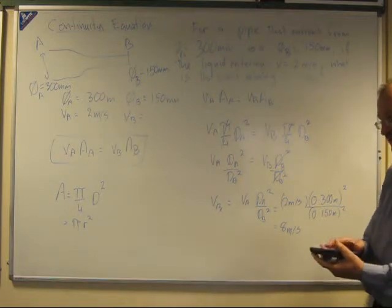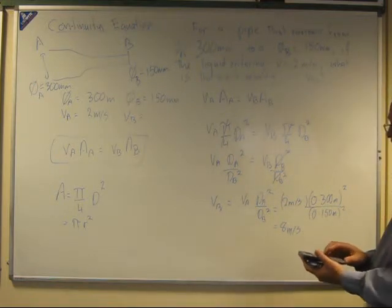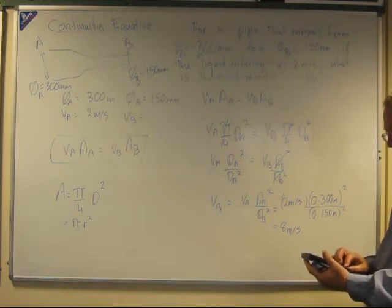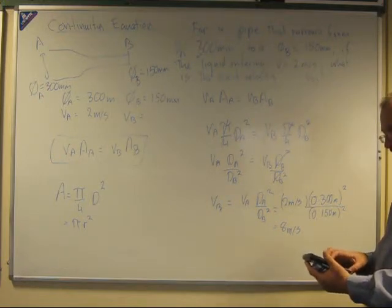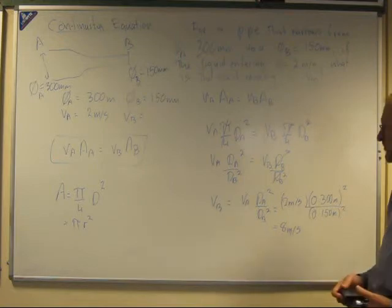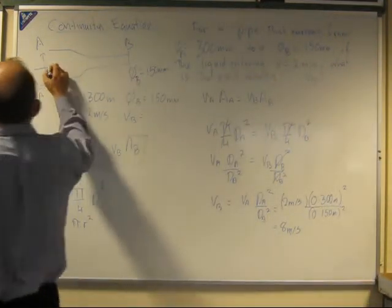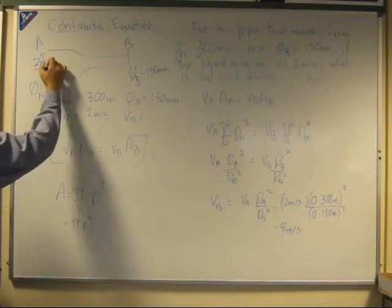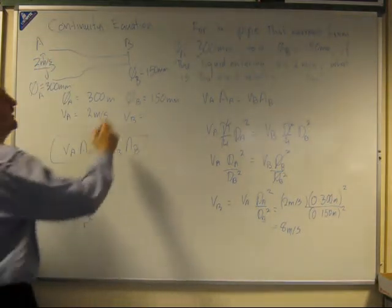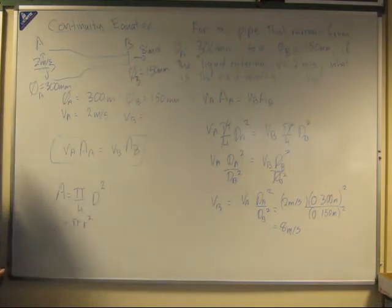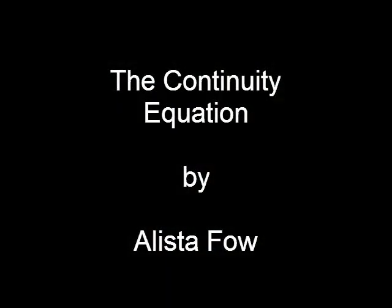Just check with calculator. So 2 times 0.3 squared divided by 0.15 squared equals 8 meters per second. So the water coming in here is going at 2 meters per second, and exits at 8 meters per second. So that's the basic use of the continuity equation.